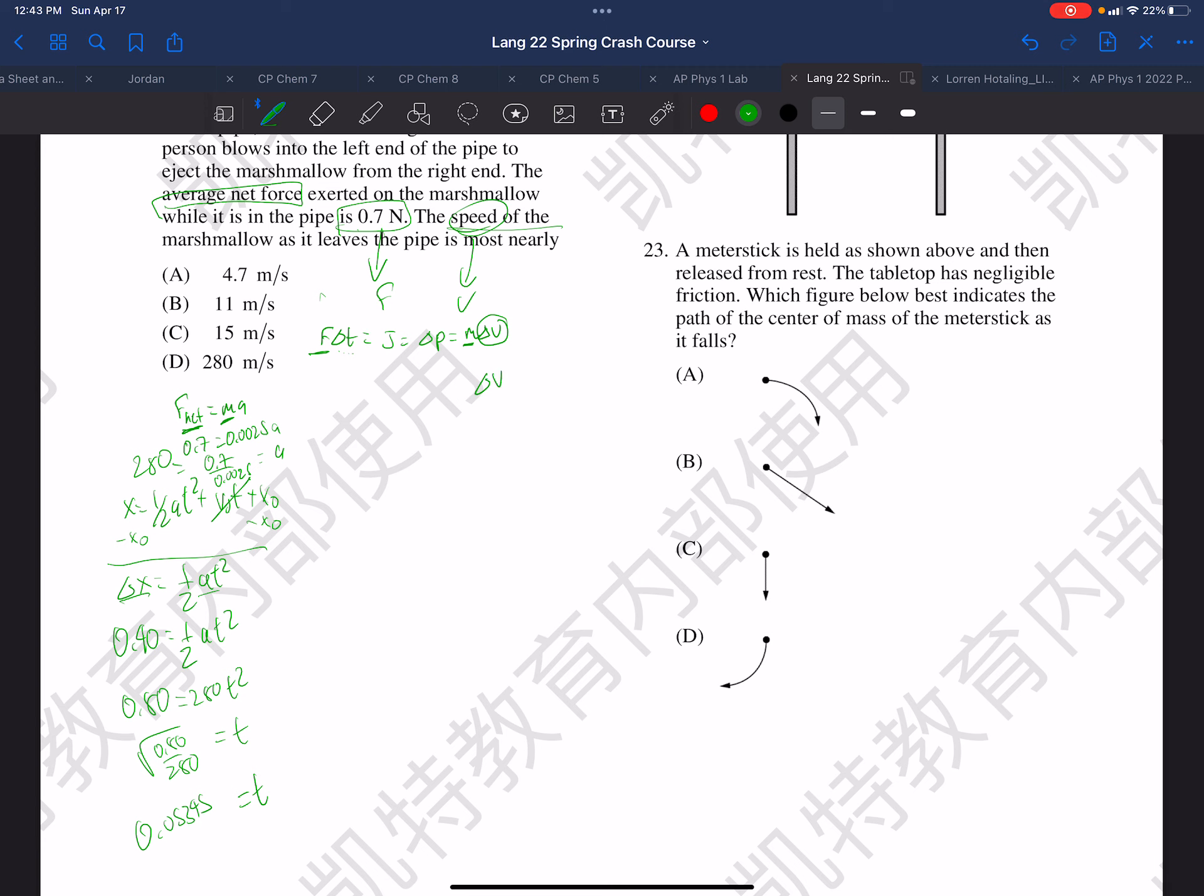So then delta v is F delta t over m. The force is 0.7, the delta t is 0.05345, and the mass is 0.0025. That gives us a delta v of 14.96, which is about 15 meters per second.